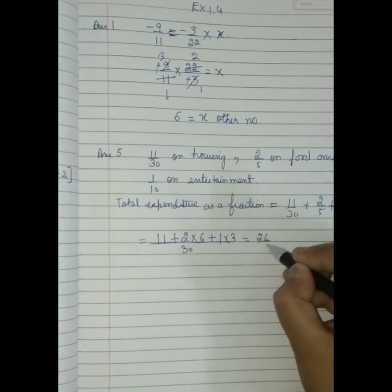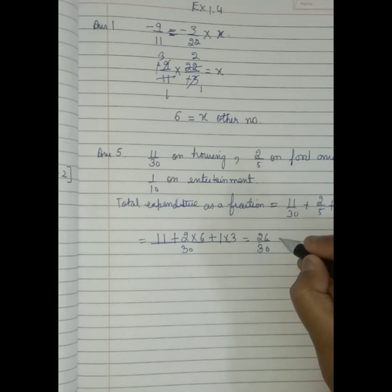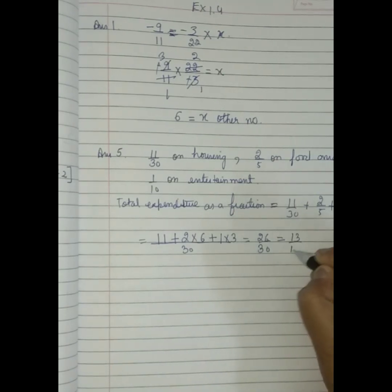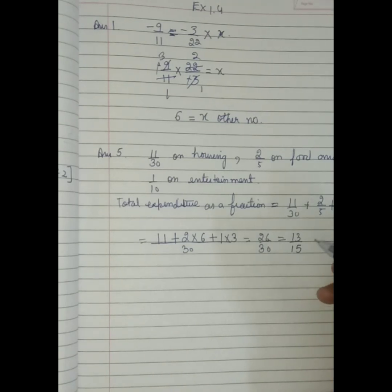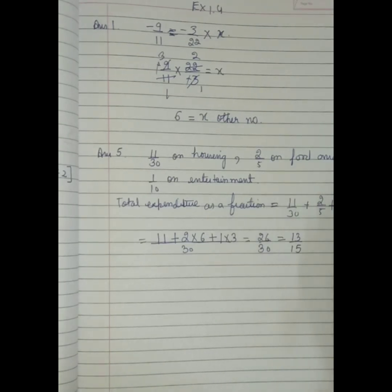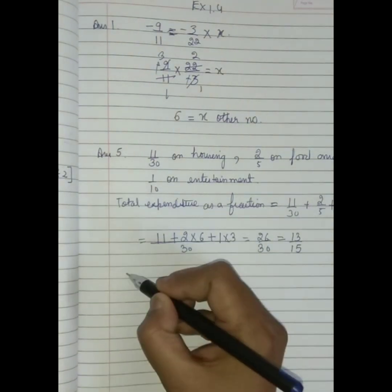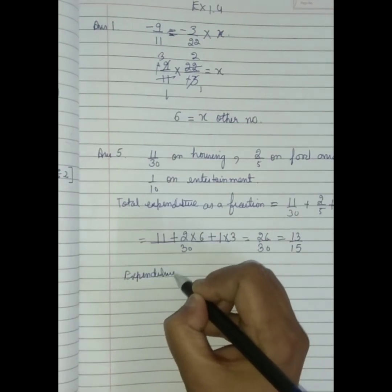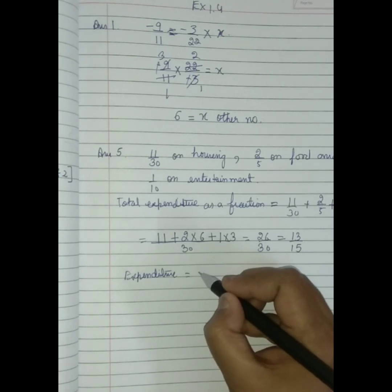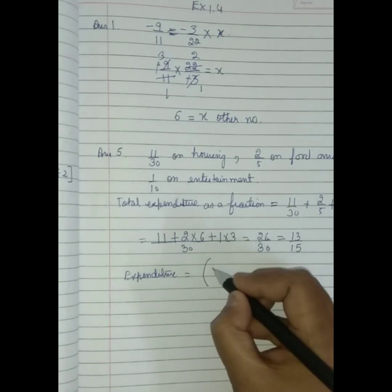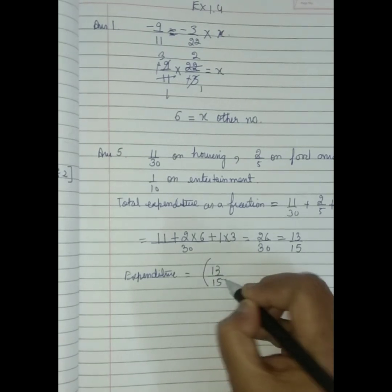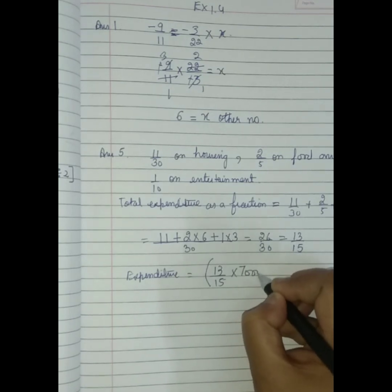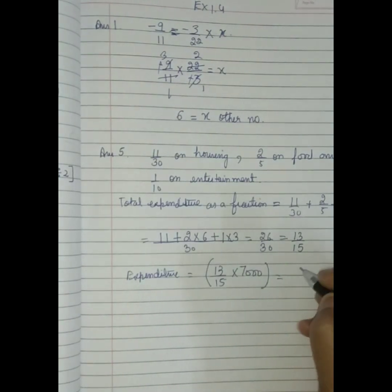Got it. Then our answer is 26 by 30. We will add them to smaller terms. It becomes this much. Now, expenditure. What is this expenditure? That becomes 13 by 15. Total income is 7,000. Then 13 into 14,000 upon 3.